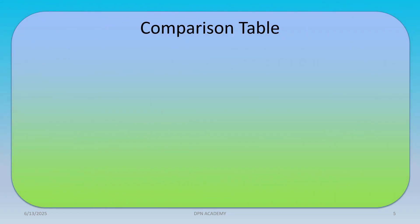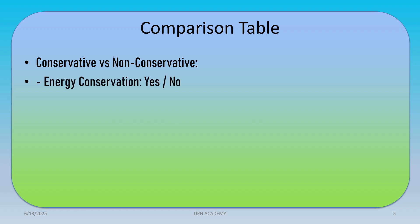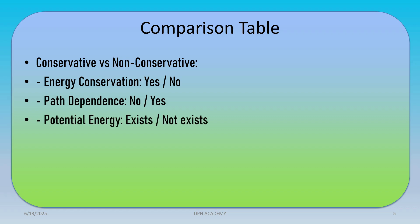Now a comparison table between conservative and non-conservative systems — this is most important while preparing for examinations. In a conservative system, energy is conserved; in a non-conservative system, it is not. In conservative, work done is path independent; in non-conservative, it is path dependent. Potential energy exists in conservative systems but not in non-conservative systems. Gravity is an example of conservative; friction is an example of non-conservative.